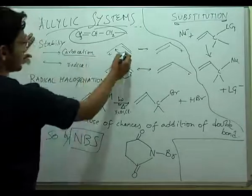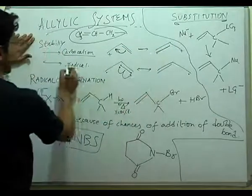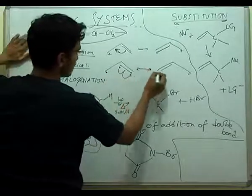If it is a carbocation then by resonance we can see these have two structures so it is stable. If it is a radical then by homolytic fission we get two structures which is also stable.